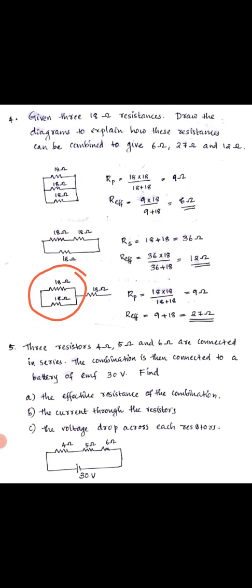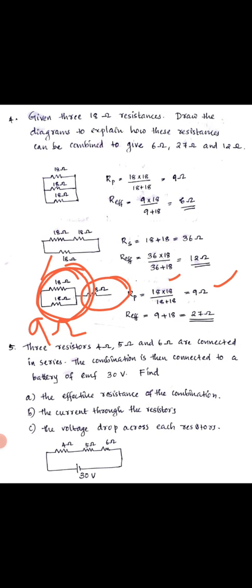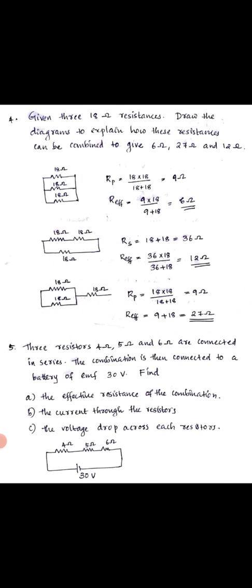In another combination, two 18 ohm resistors are connected in parallel: 18 into 18 divided by 18 plus 18 = 9 ohm. This 9 ohm effective resistance is then connected in series with the remaining 18 ohm resistor: 9 plus 18 = 27 ohm. So the effective resistance of this combination is 27 ohm.